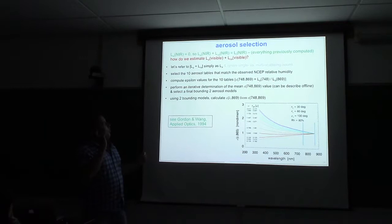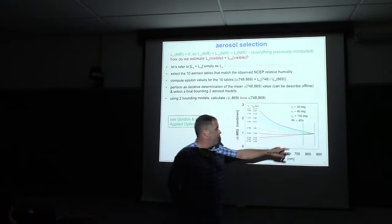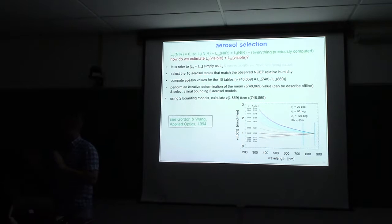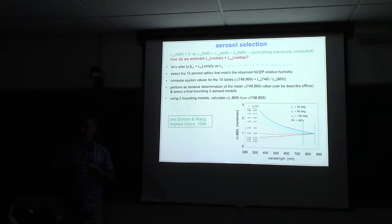We do an iteration technique to find out where our observed epsilon falls into here. And you pick eventually down to two bounding models. Does that make sense? So we have our measured epsilon, assuming the black pixel. We have eighty models reduced to ten by knowing what the relative humidity is. We calculate the epsilon for each of those ten models. And then we find the two lookup table models that most closely match our measured epsilon. So we've narrowed it down from eighty to two.